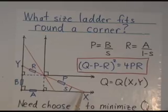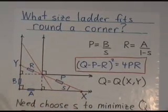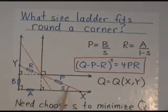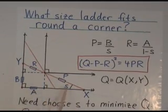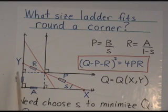So to start off, we start with a ladder in that position there. We let this spread be S. Then this quadrant's P is equal to B over S, and this quadrant's R is equal to A over 1 minus S.